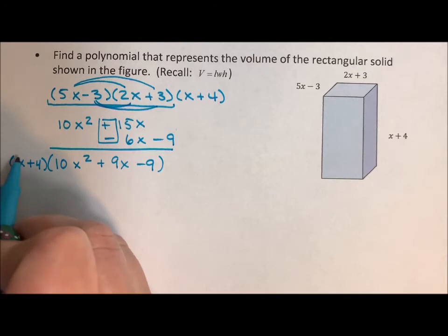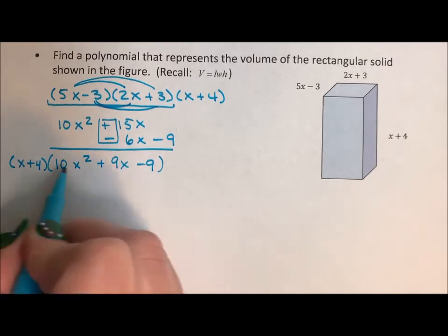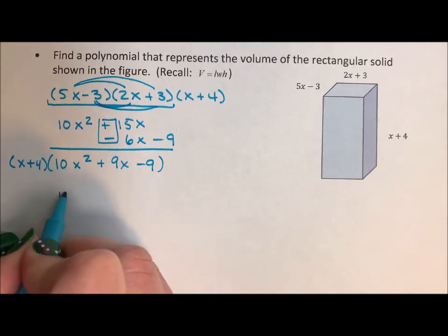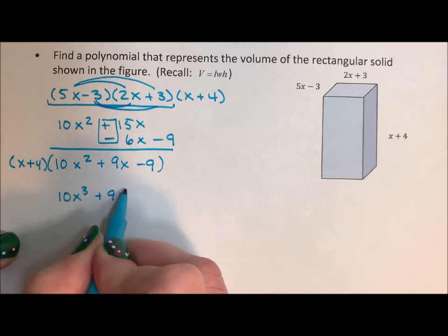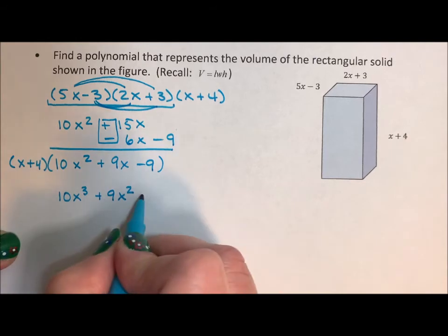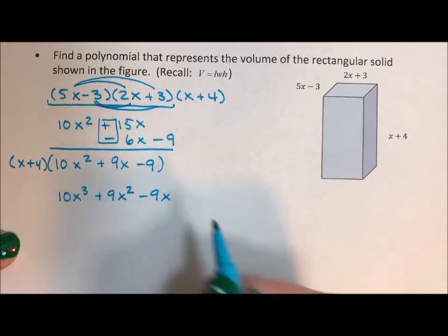So I'm going to distribute the x in. x times 10x squared is 10x cubed. x times 9x is 9x squared. x times negative 9 is negative 9x.